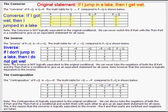Now let's look at the inverse. The inverse of if P then Q is if not P then not Q. So the inverse of 'if I jump in a lake, then I get wet' is 'if I don't jump in a lake, then I do not get wet.' Logically, that doesn't seem equivalent to the original statement either, because it could start raining and you'd get wet even though you didn't jump in the lake. We show this with the truth table.